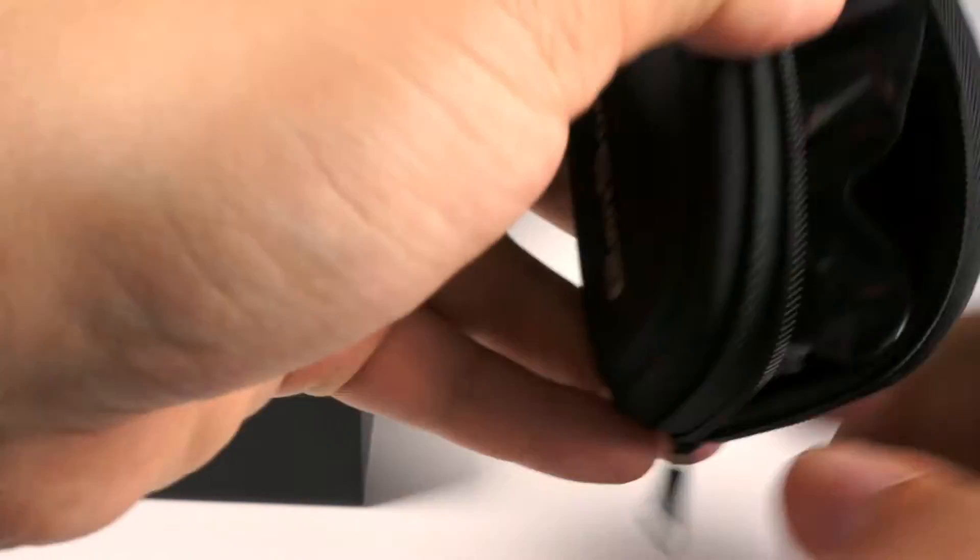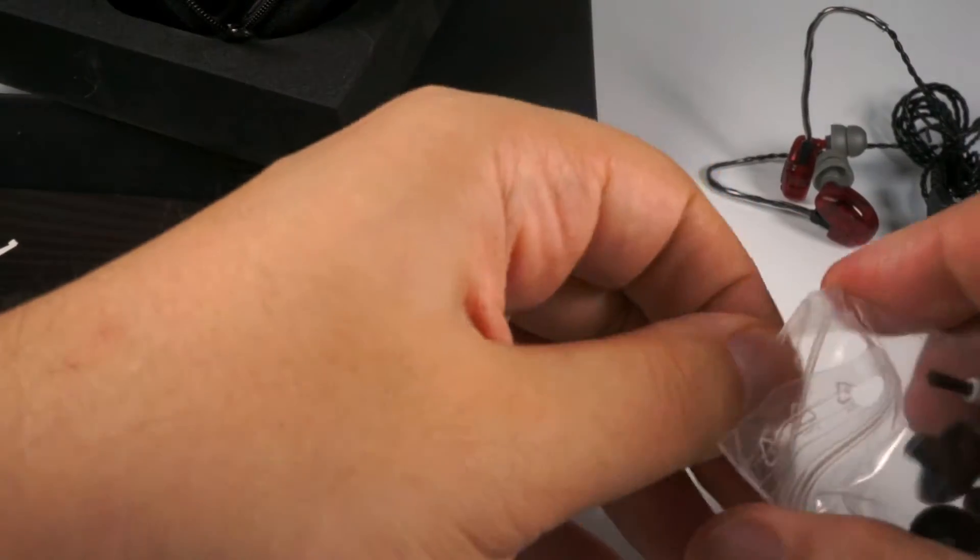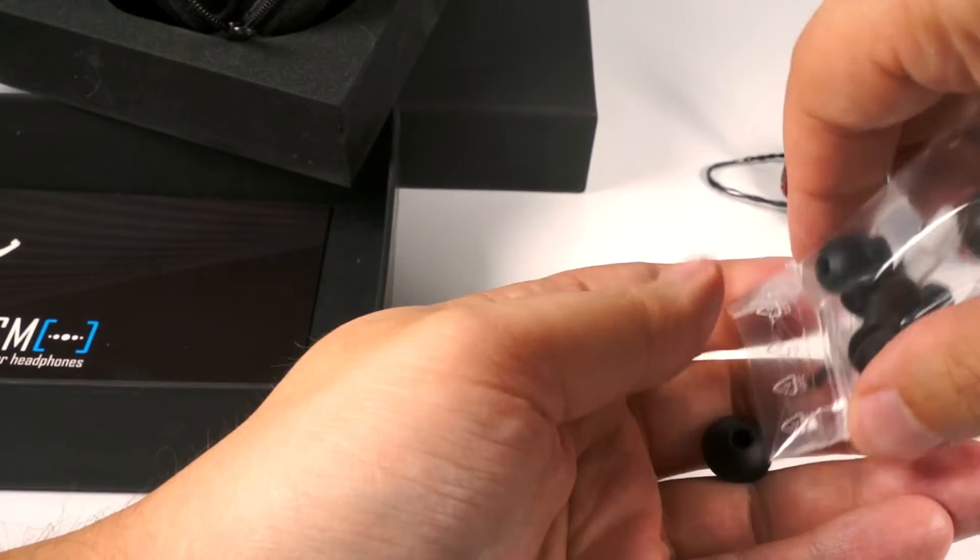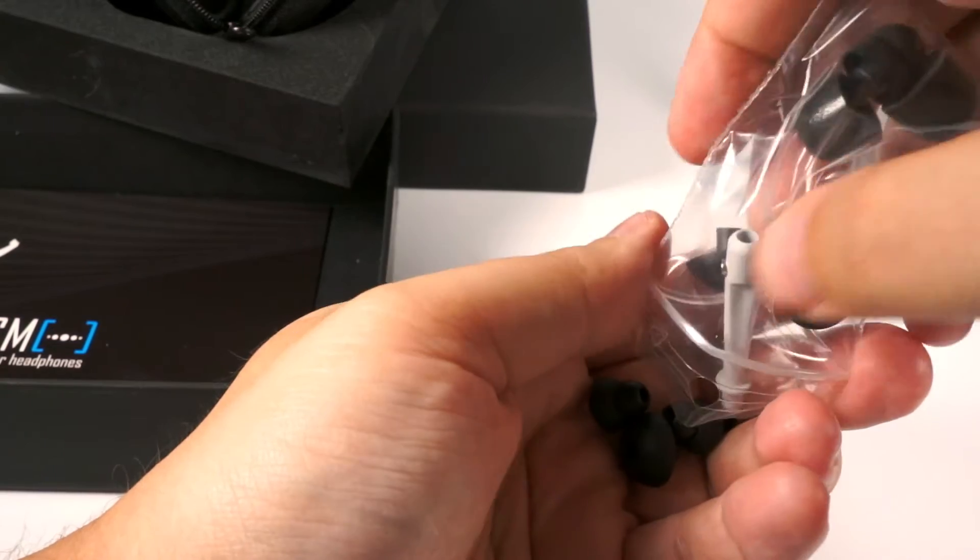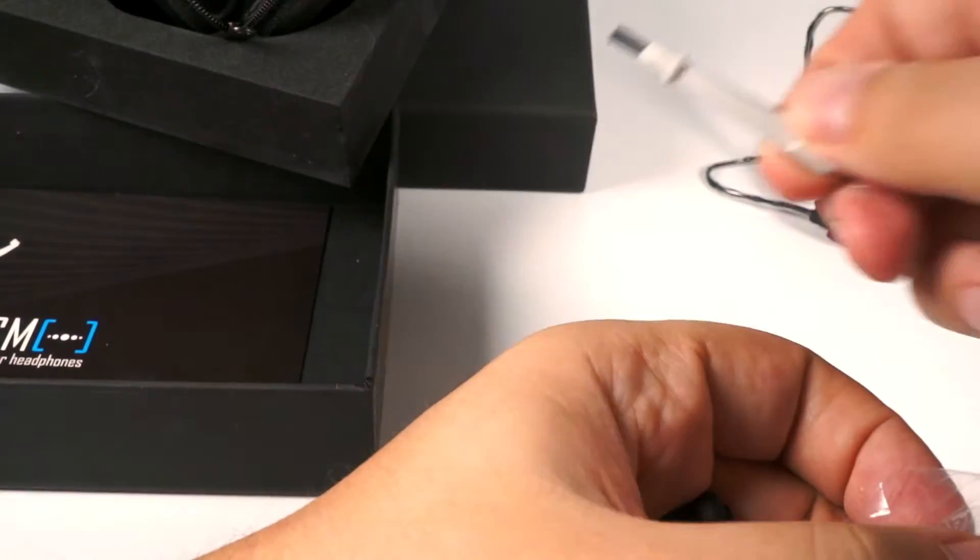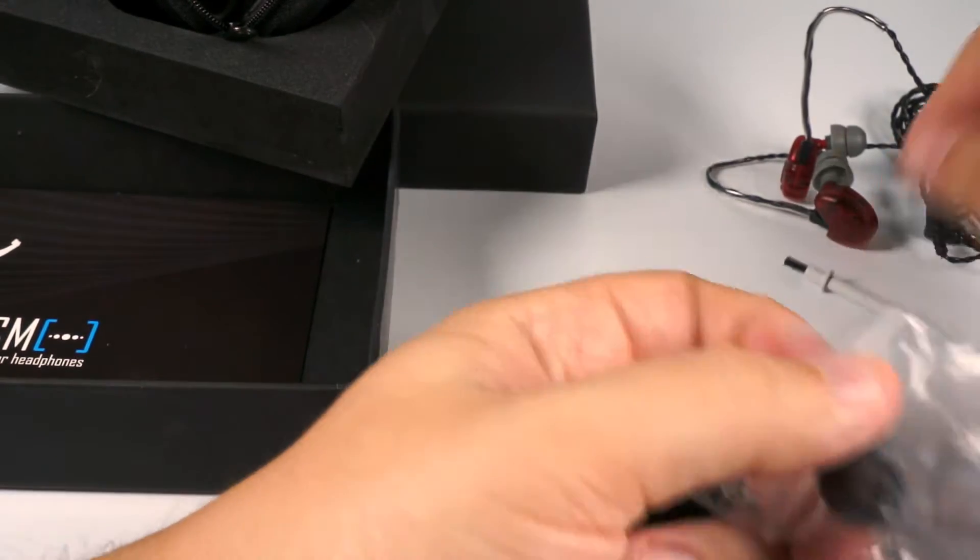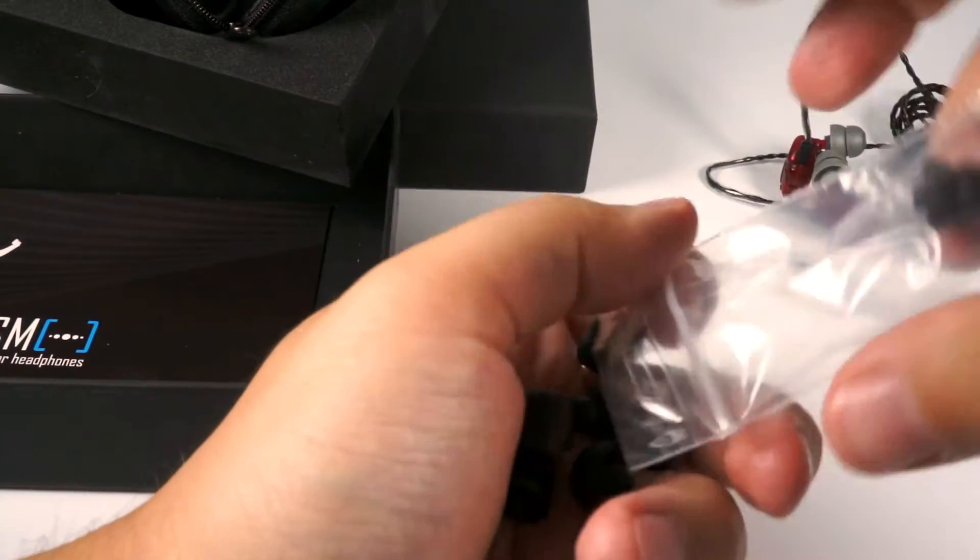And you will have a nice pouch with a set of accessories inside. For accessories you will have a set of tips and cleaning tool. So here is a brush for cleaning. Let me get all the tips.